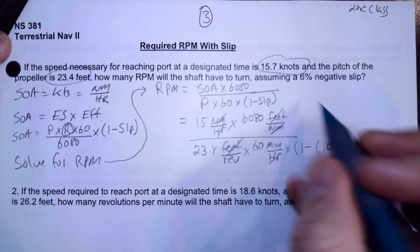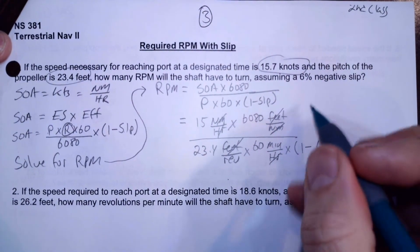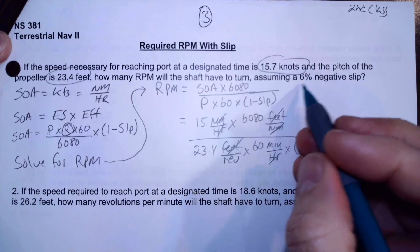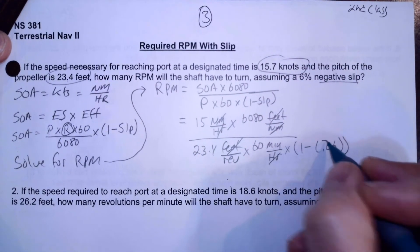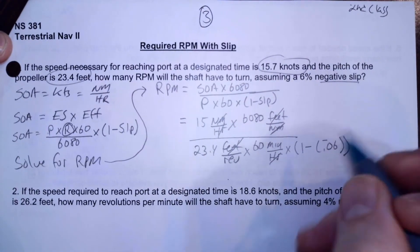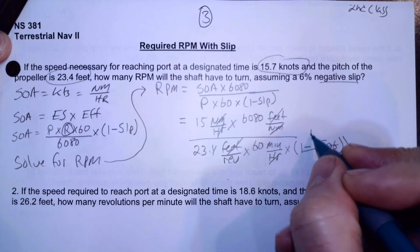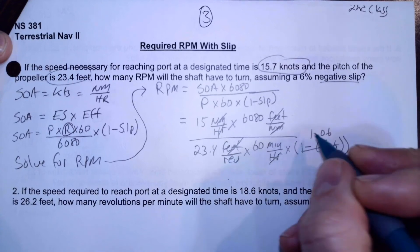I convert that from a percent to a number by dividing by a hundred, but it's not just 6%, it's negative 6%. So it's negative. So 1 minus negative 0.06, that's going to become 1.06.